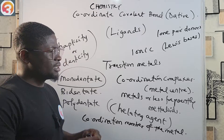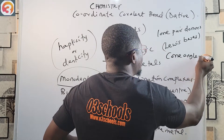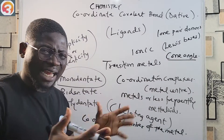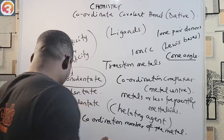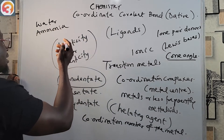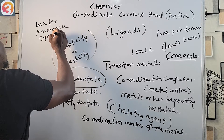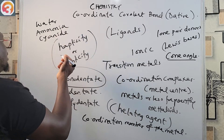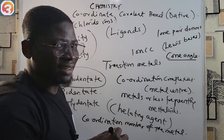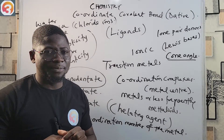The size of a ligand molecule is described by its cone angle. Simple ligands include water, ammonia, cyanide, and chloride ions. These are all examples of simple ligands.